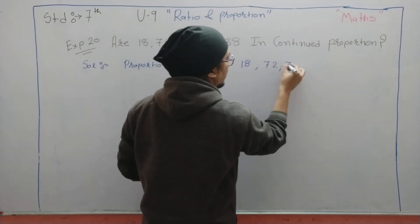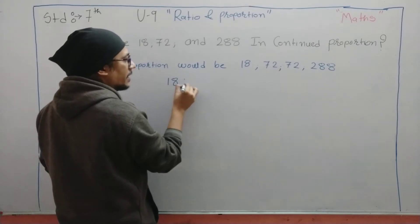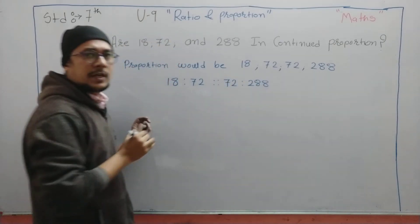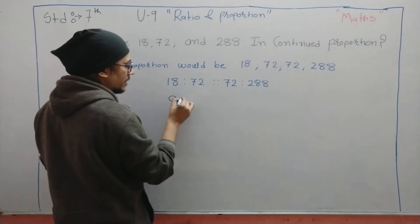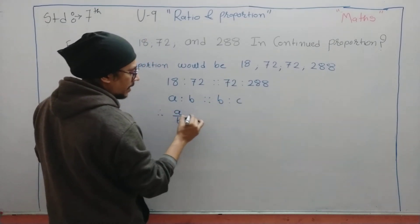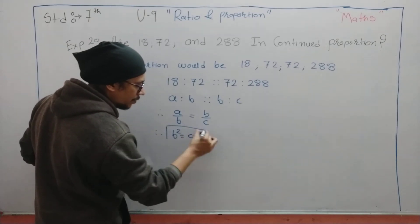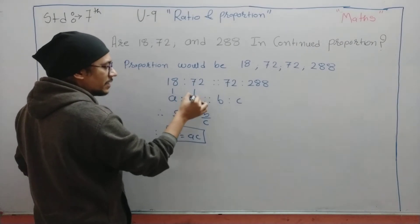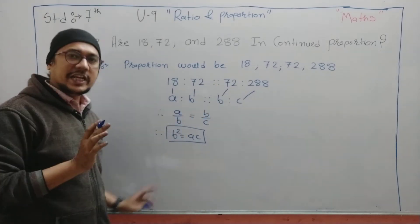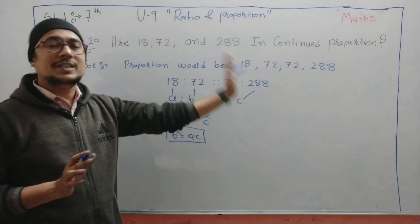Yes or no? We already know that for continued proportion we have a formula which is: a is to b as b is to c. This fraction can be a upon b equals to b upon c. We already know that b square is equal to a times c. It is a formula. Now a is equal to 18, b is equal to 72, c is equal to 288. Just we have to put the values in the formula and check whether it is LHS equals to RHS. If they are not equal, that means they are not in continued proportion.